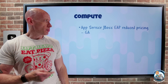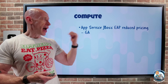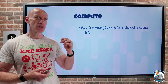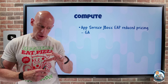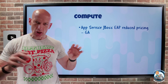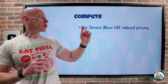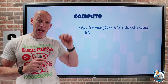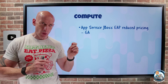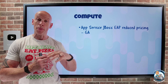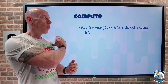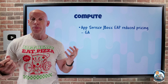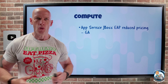On to what's new on the compute side. For App Service, there's now a reduction in price for the paid SKUs — not the free SKU, not F1, but all of the other tiers — when you're using JBoss EAP. The EAP is the Enterprise Application Platform, which is a Java-based app server developed by Red Hat. There's a 63% price reduction, so it makes it a lot more accessible.